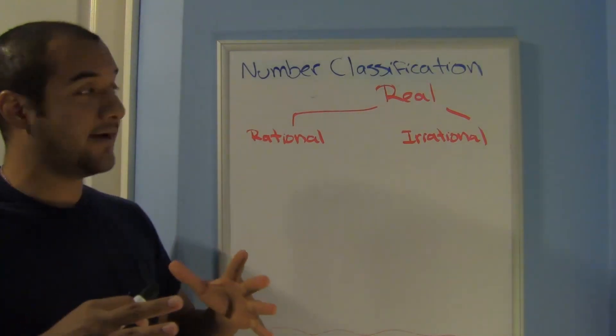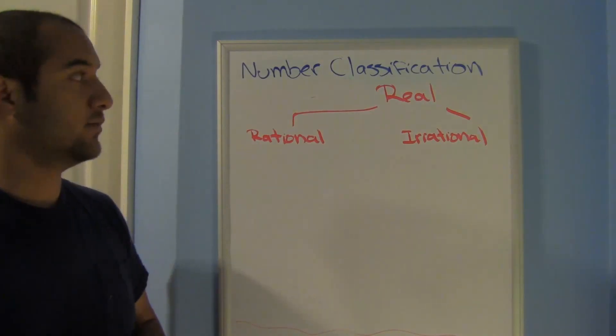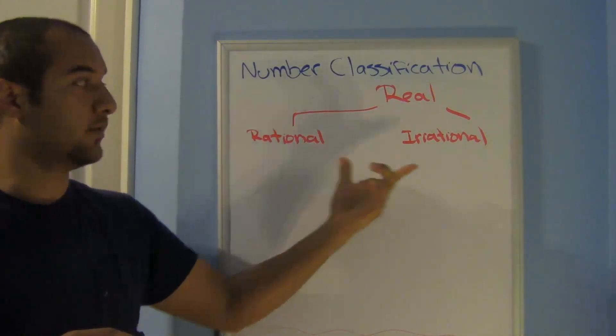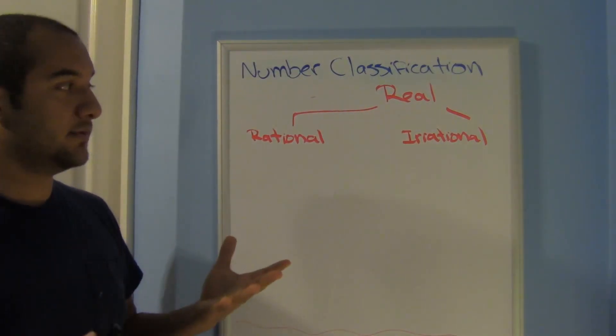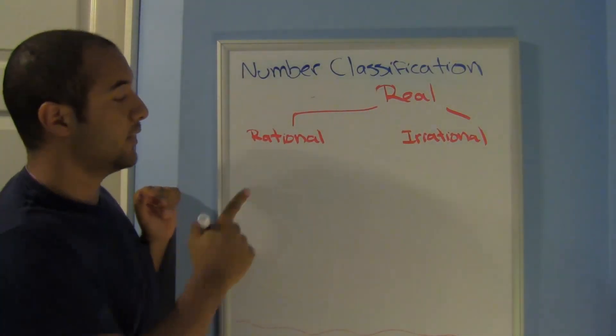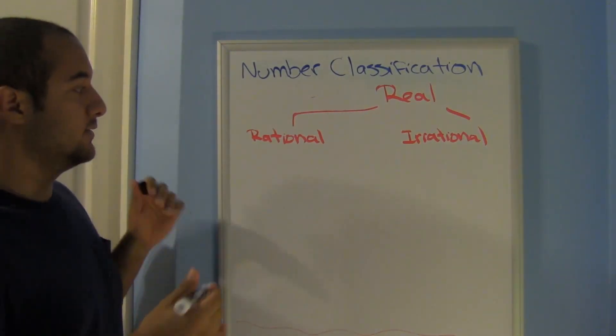Here when we classify numbers, we're only going to look at the reals for right now, real numbers. We classify them into either rational or irrational. So what makes them different?